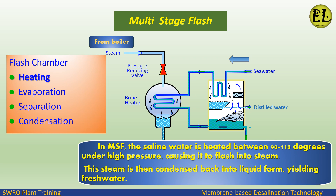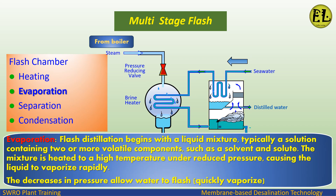In the flash chamber heating process, the saline water is heated to between 90 to 110 degrees under high pressure, causing it to flash into steam. This steam is then condensed back into liquid form, yielding fresh water.